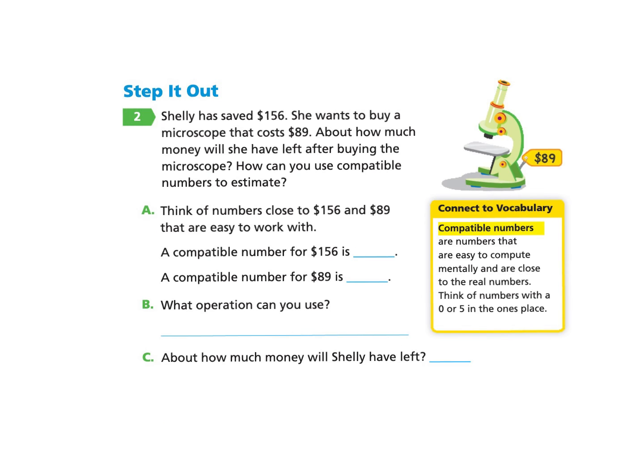Please turn to the next page, page 263 under Step It Out, part two. Shelly has saved $156. She wants to buy a microscope that costs $89. About how much money will she have left after buying the microscope? How can you use compatible numbers to estimate?